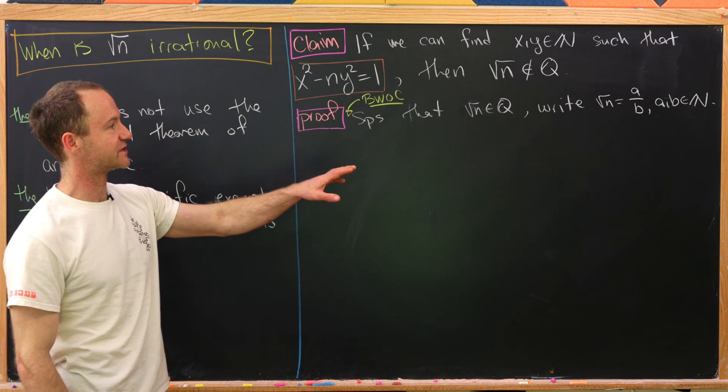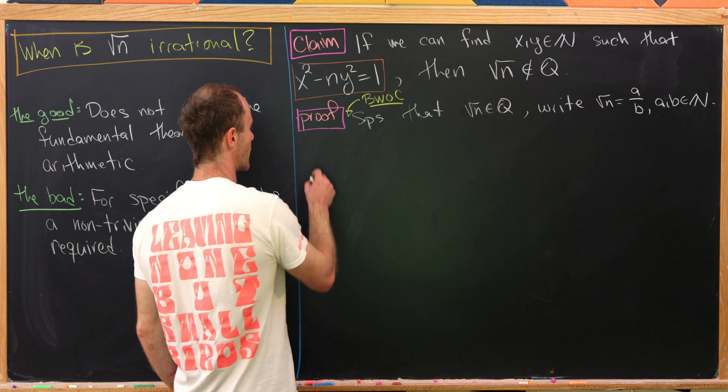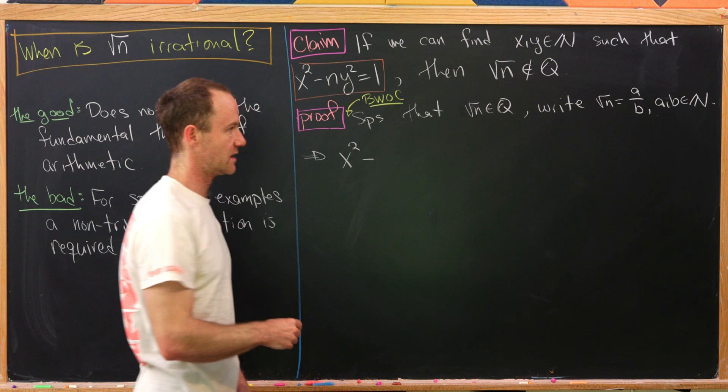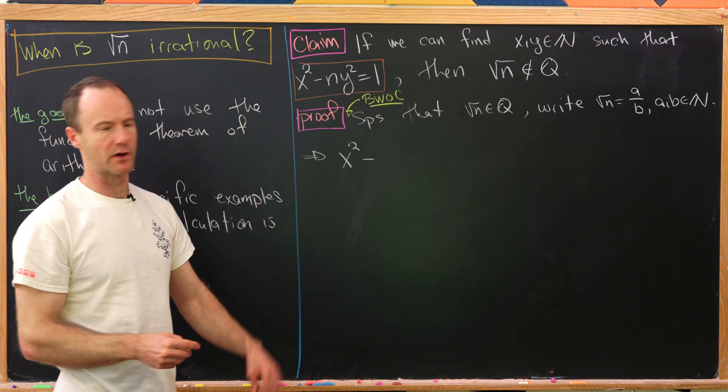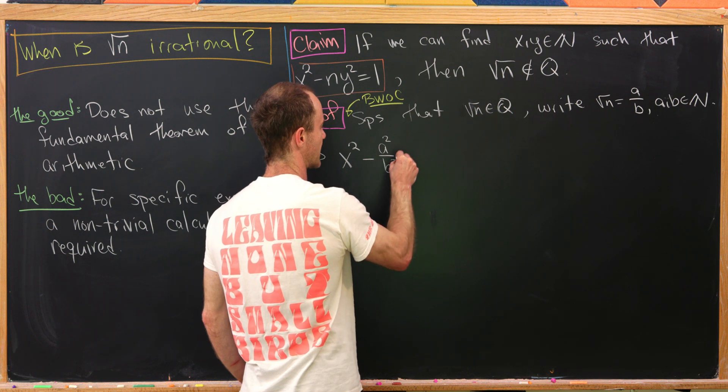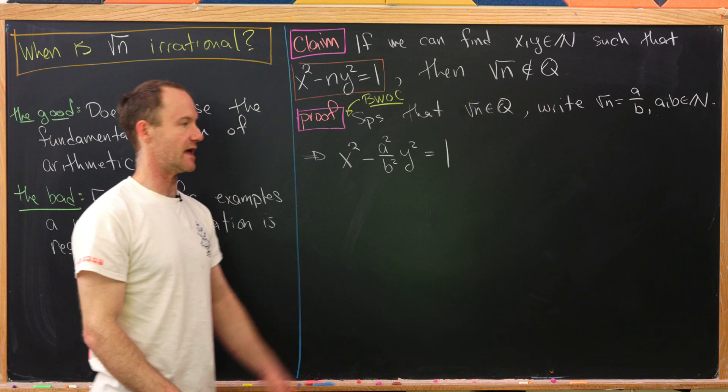Now we'll insert that version of the square root of n into our equation. That's going to leave us with x squared minus n times y squared. But n is the square root of n squared, so I can write that as a squared over b squared times y squared equals 1.